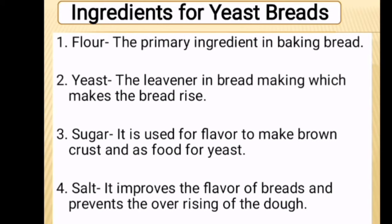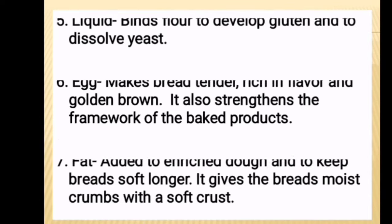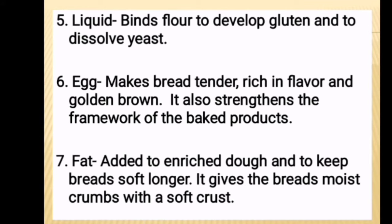Ingredients for making yeast breads. Number 1, Flour — the primary ingredient in making bread. The best flour used for making bread is bread flour. Number 2, Yeast — the leavener in bread making which makes the bread rise. Number 3, Sugar — used to add flavor, make a brown crust, and as food for yeast. Number 4, Salt — it improves the flavor of breads and prevents the over-rising of the dough. Number 5, Liquid — it binds flour to develop gluten and to dissolve the yeast.